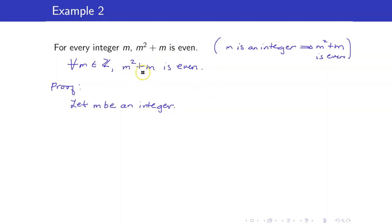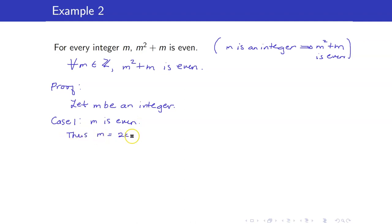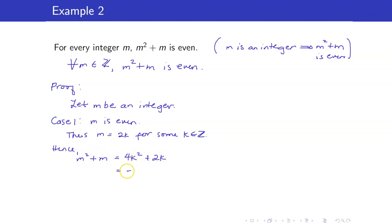We want to show that m² + m is even. We cannot do anything if we just assume m is an integer, so we divide into two cases. For Case 1, m is even. Thus m = 2k for some integer k. Hence m² + m = 4k² + 2k, which can be written as 2(k² + k). Therefore m² + m is even, because k² + k is another integer.